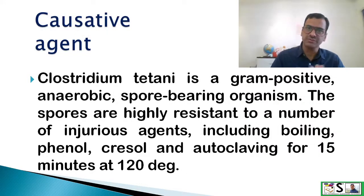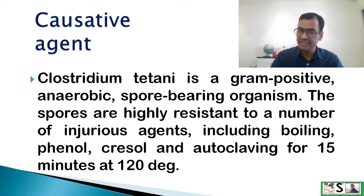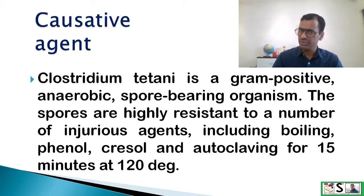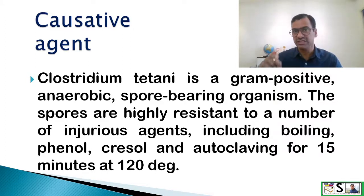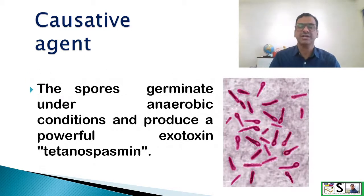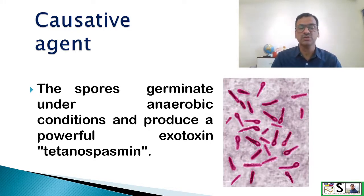What is the causative agent of tetanus? Clostridium tetani is a gram-positive anaerobic spore-bearing organism or bacteria. The spores of this bacteria are highly resistant to a number of harmful agents including boiling, phenol, cresol, and autoclaving even for 15 minutes at 120 degrees centigrade, meaning it can survive for longer periods. The spores germinate under anaerobic conditions and produce a powerful exotoxin.